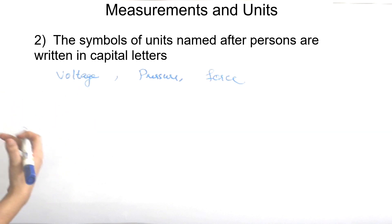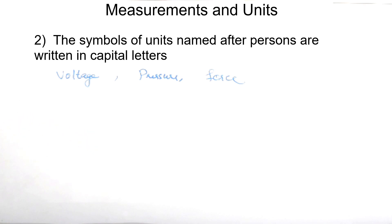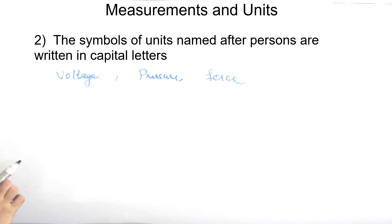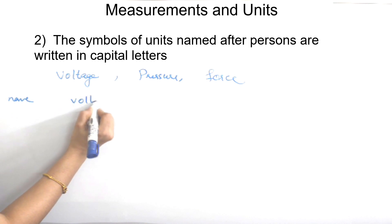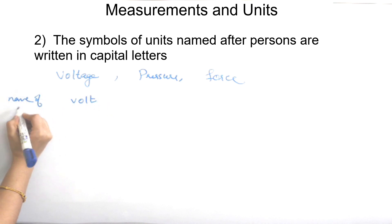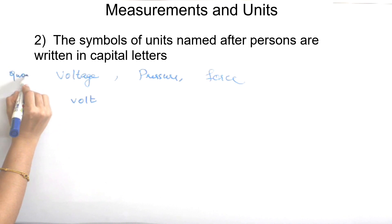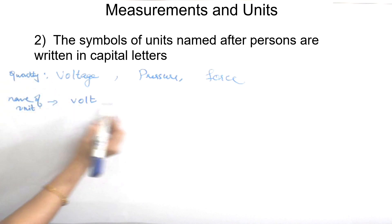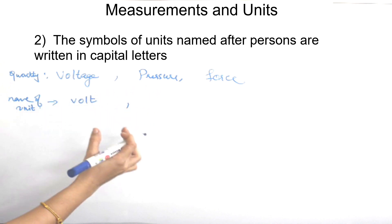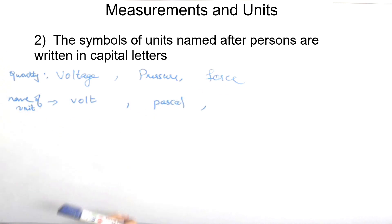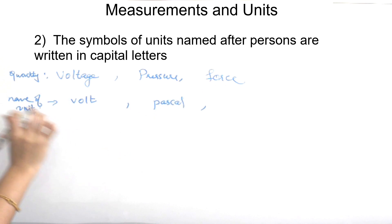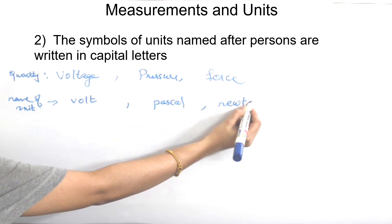Units are named after scientists. For voltage, the electric battery was invented by Volta, so the unit is the volt (V). For pressure, the unit is the pascal (Pa), named after Pascal. For force, the unit is the newton (N), named after Sir Isaac Newton.